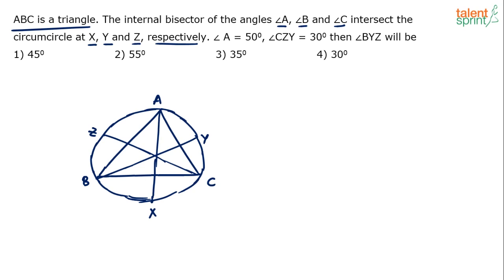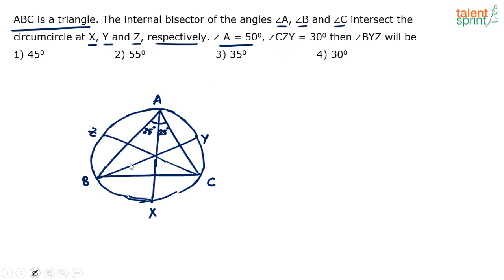Angle A is 50 degrees. Since AX is an angular bisector, this side is 25 degrees and the other side is also 25 degrees — it divides into two equal halves. Angle CZY is 30 degrees. So let me connect Z and Y. This angle CZY is 30 degrees.